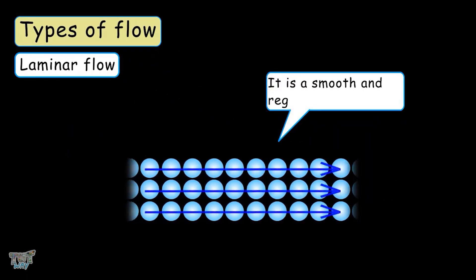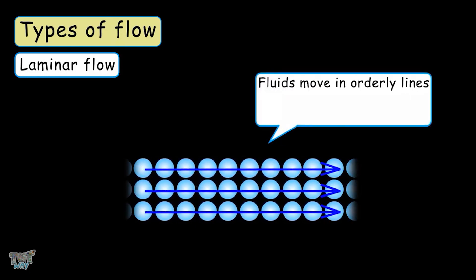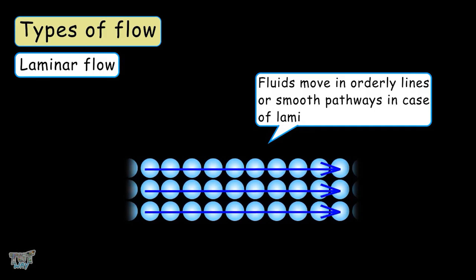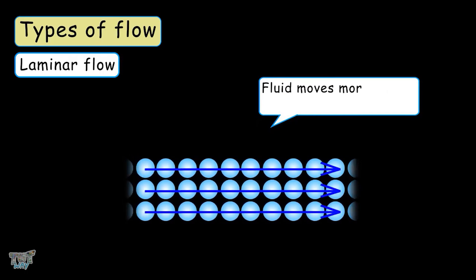Laminar flow is the smooth and regular flow of fluids. Fluids move in orderly lines or smooth pathways in laminar flow. In this type of flow, fluids move more quickly.